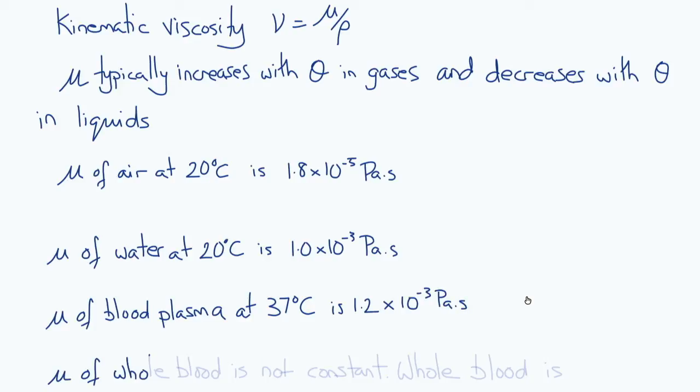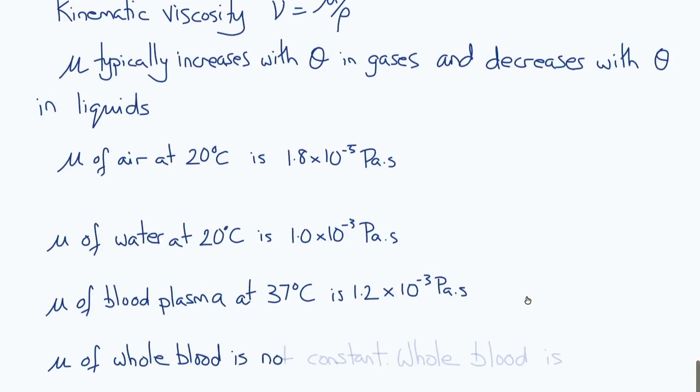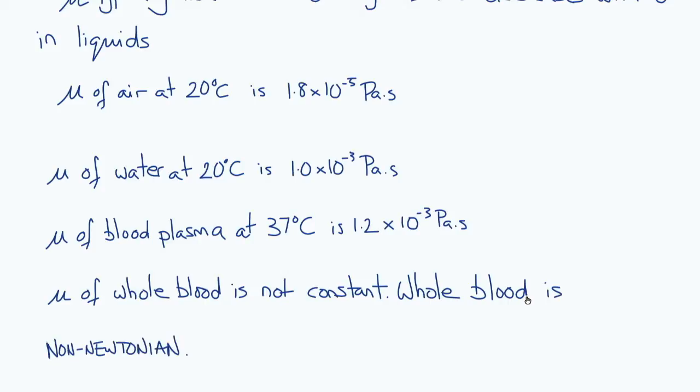But the viscosity of whole blood is not a constant. Unlike blood plasma, whole blood is a non-Newtonian fluid. Presence of the red blood cells makes whole blood non-linear, and it's sometimes referred to as a shear-thinning fluid.